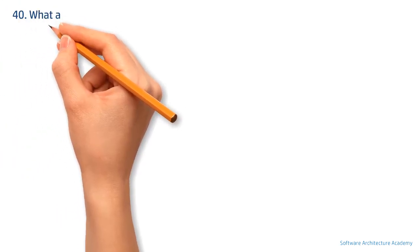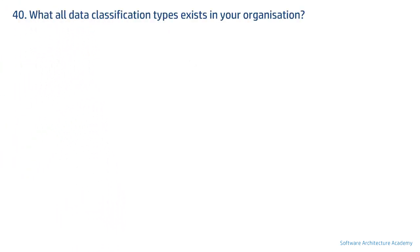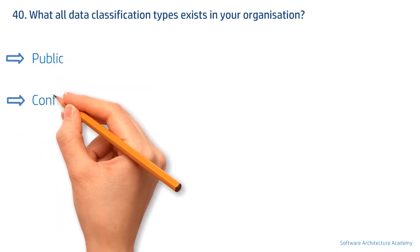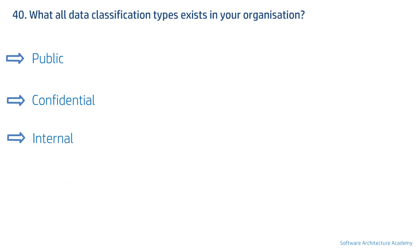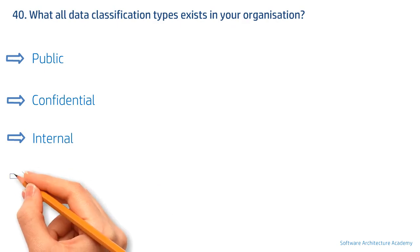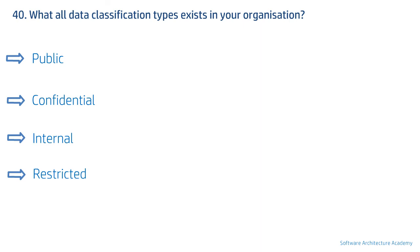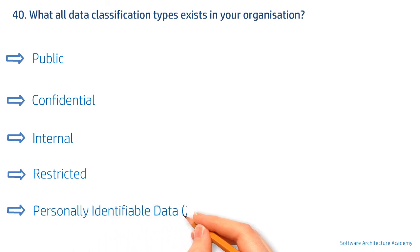The last question in this interview series, question number 40, is data protection related: what data classification types exist in your organization? This can be asked if the role has some regulatory mention. Typically we have: public, confidential, internal — meaning internal to the organization — restricted, meaning only a few people with job requirements or clearance have access, and PII (personally identifiable information), like social security number in the US, NHS number in the UK, and equivalent identifiers in other countries.